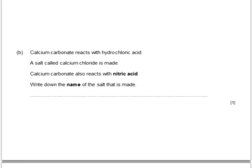Calcium carbonate reacts with hydrochloric acid and a salt named calcium chloride is made. Calcium carbonate also reacts with nitric acid. The salt would still be a calcium compound, but because you're using nitric acid you'd get a nitrate — so the salt would be called calcium nitrate.